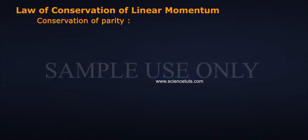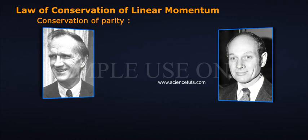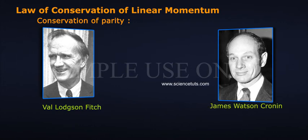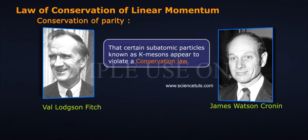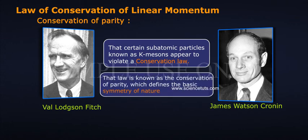It was a great shock, therefore, when two American physicists — Val Fitch in 1923 and James Watson Cronin in 1931 — discovered in the mid-1960s that certain subatomic particles known as K-Mesons appear to violate a conservation law.